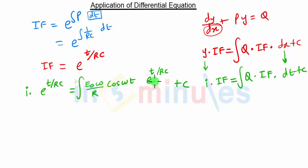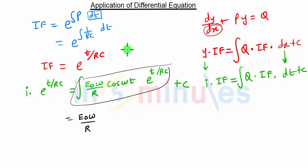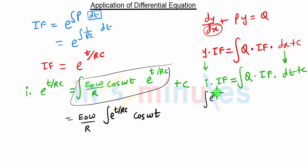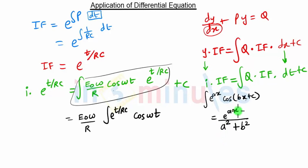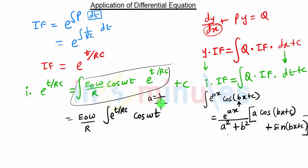We have to perform the integration of E0·ω·cos(ωt)·E raised to t/RC. Since E0, ω, and R are constants, they can be taken out of the integration sign, leaving the integration of cos(ωt) times E raised to t/RC. We apply the formula: the integration of E raised to ax times cos(bx + c) equals E raised to ax upon (A squared plus B squared), multiplied by A·cos(bx + c) plus B·sin(bx + c).